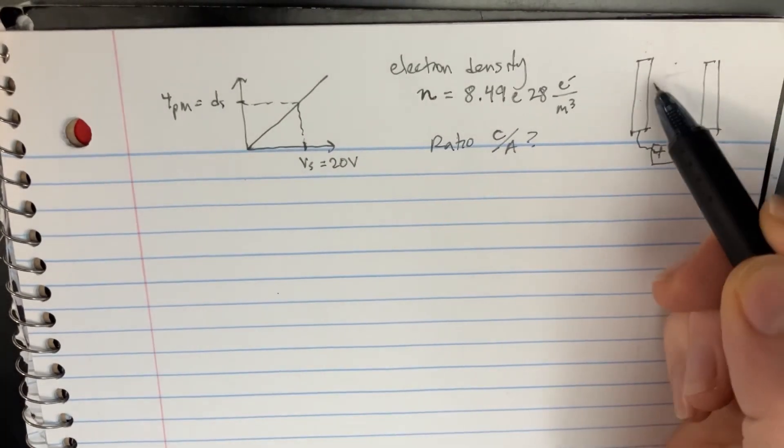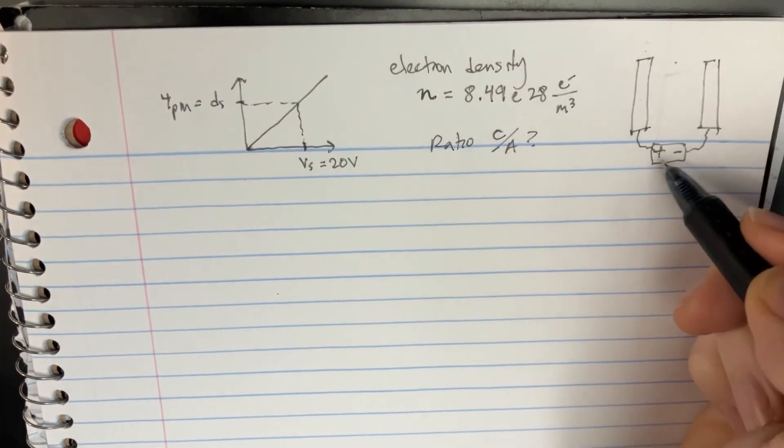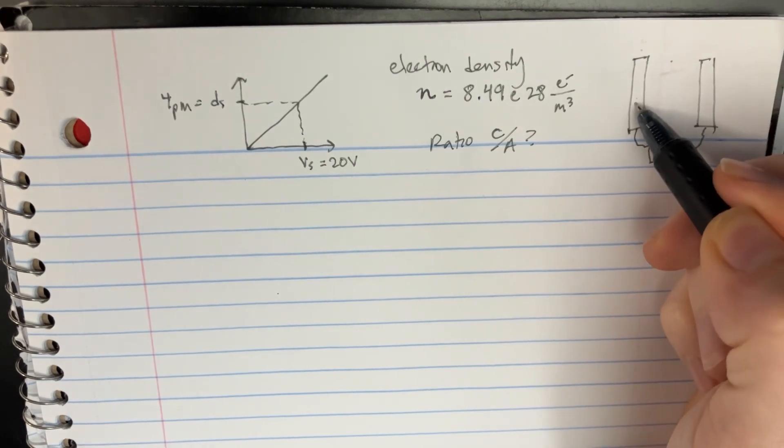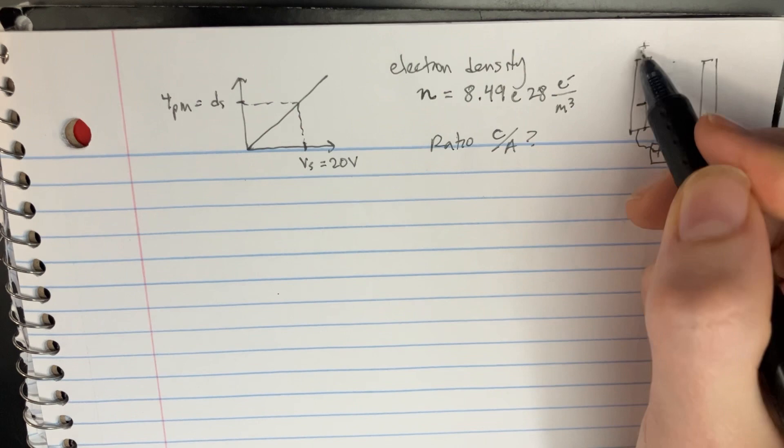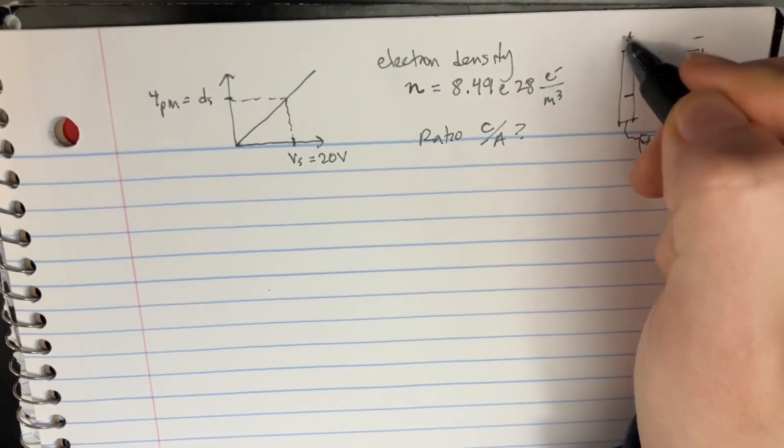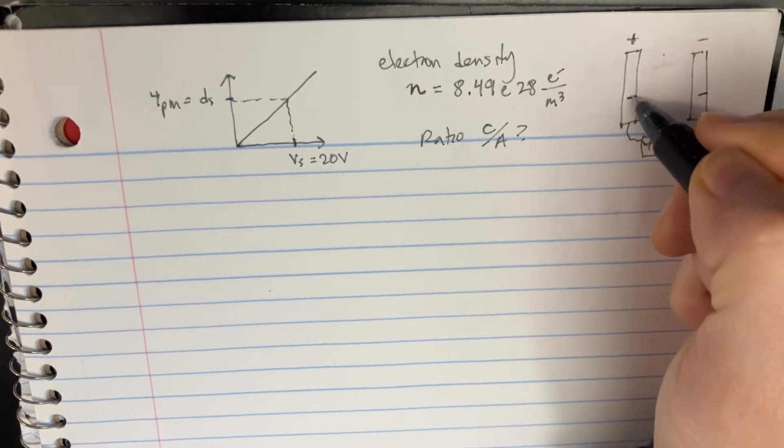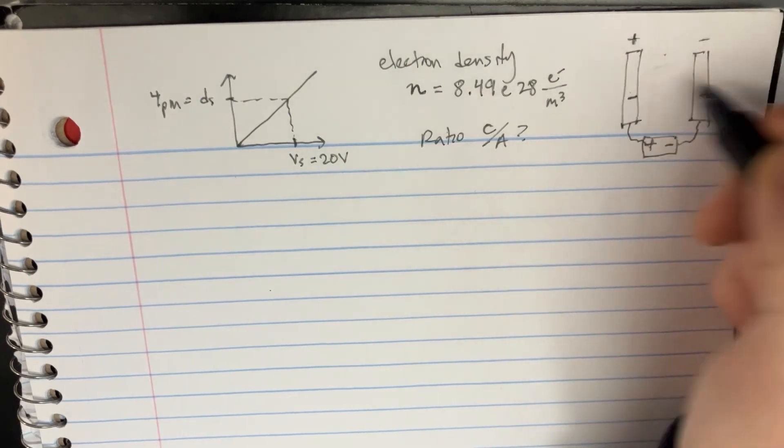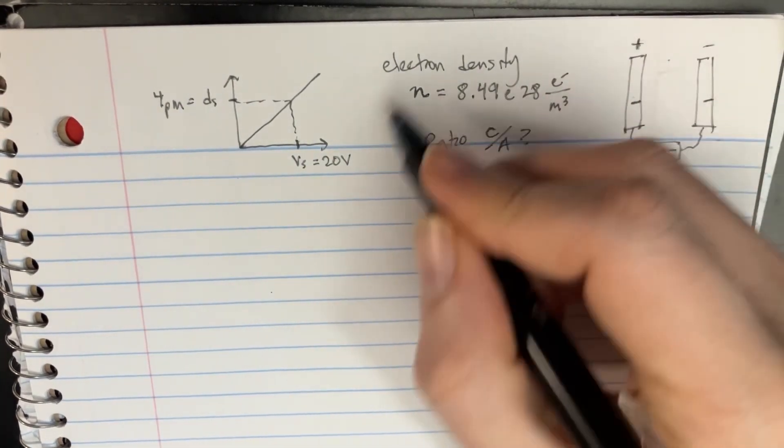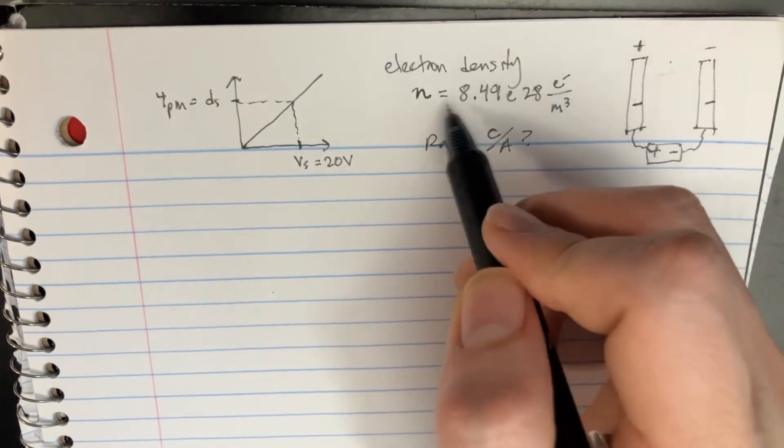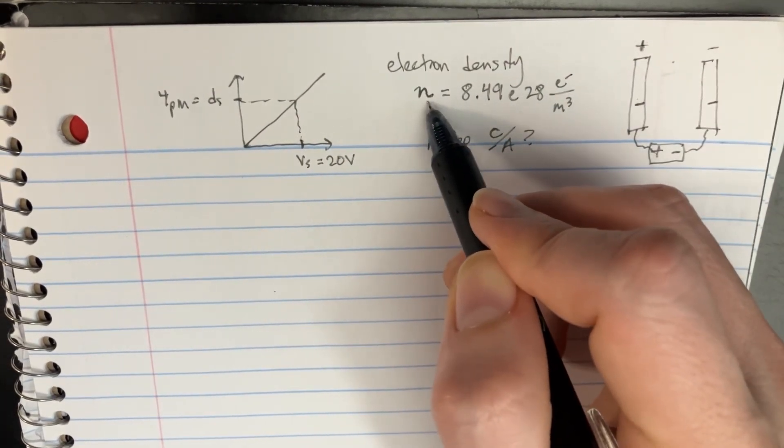So in this question we're going to be looking at this capacitor and turning on a battery, and then watching the electrons sort of shift over. They're coming from this depth from inside here, creating this sort of plus or minus difference in this battery. That's kind of what's happening. So we're given the electron density that's going to be this curly n.